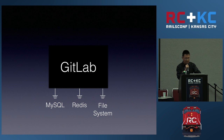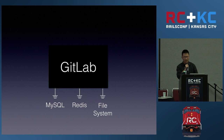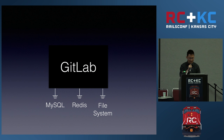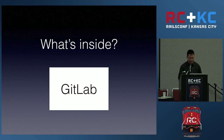If you look closer, it also uses some other stores on the back end. One is MySQL — they also support PostgreSQL because they use ActiveRecord, which abstracts the actual DB implementation, so it's changeable. The other is Redis, used as a queue for delayed tasks and also as cache. And the other is the file system, which they use to store Git repositories.